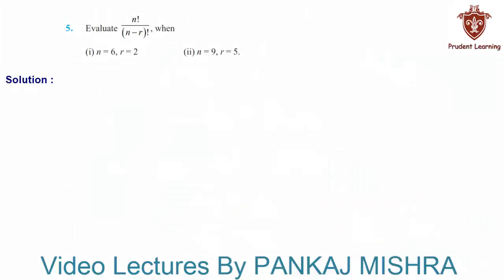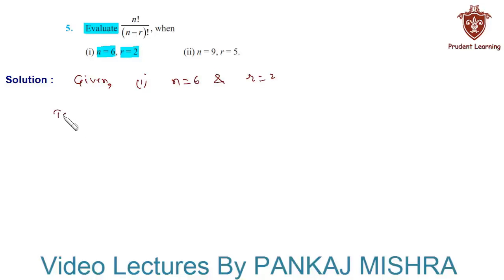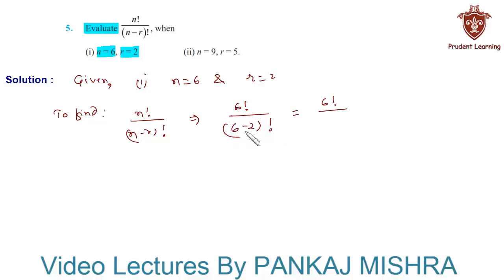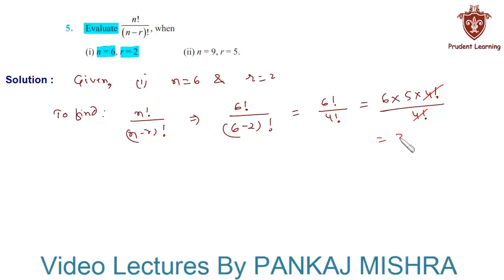The next problem: evaluate n! / (n − r)! when n = 6 and r = 2. Substituting, we get 6! / (6 − 2)! = 6! / 4!. We write 6! as 6 × 5 × 4!, and cancel 4! from numerator and denominator, leaving 6 × 5 = 30. Hence n! / (n − r)! for n = 6, r = 2 is 30.